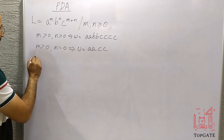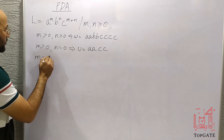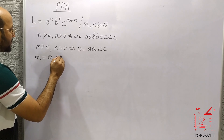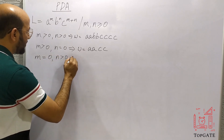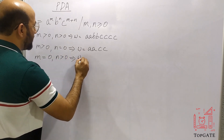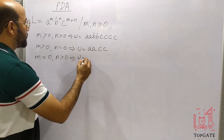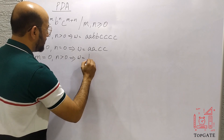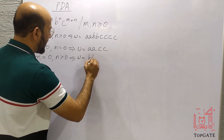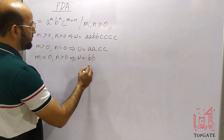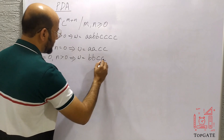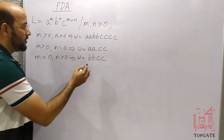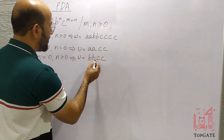The third case is if m equals zero and n is greater than zero. Then there will be no a's in the string — it starts with b. If we take n equal to two, then we will get b, b, c, c. That is zero plus two equals two c's. So we get b, b, c, c.